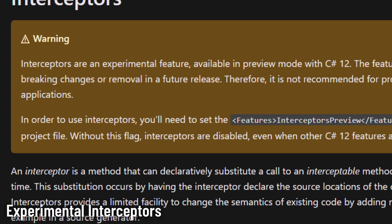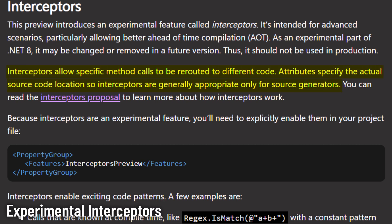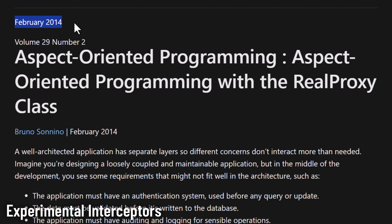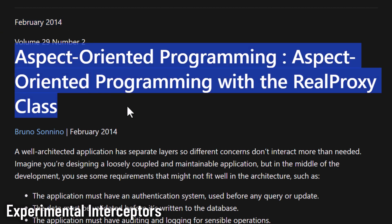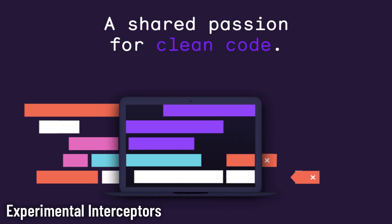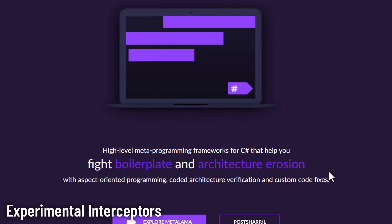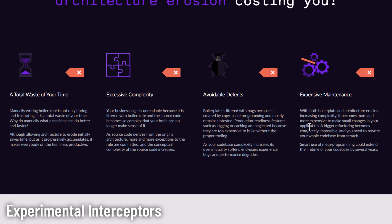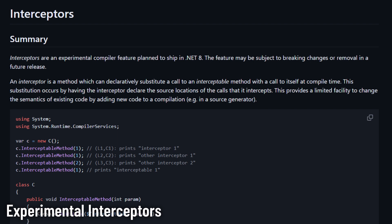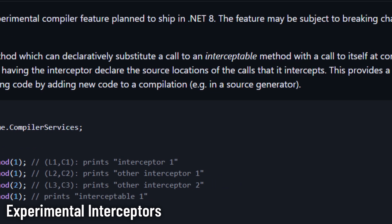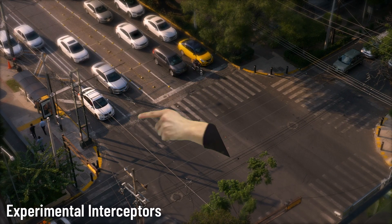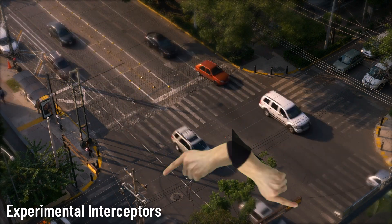Taking a glimpse into what's next: interceptors. Although in their infancy, these are geared up to revolutionize compilation, facilitating method call redirection and setting the stage for customized code paths. Enhancing or intercepting method behaviors is not entirely new — developers often resorted to aspect-oriented programming (AOP) using tools like PostSharp, which allowed injecting behaviors into methods without modifying their actual code. This was useful but often required additional dependencies and sometimes complex configurations. C# 12's experimental interceptors seem to be heading in a direction that might allow these behaviors natively without the need for external tools.